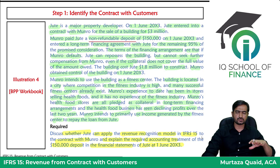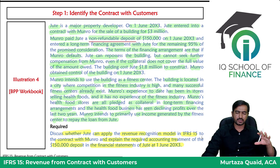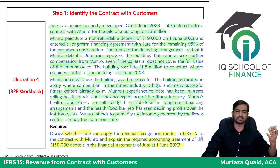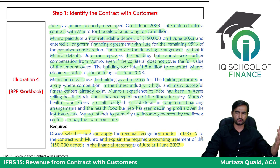Looking at the overall scenario, we check whether the contract meets the 5 criteria under IFRS 15. Of the 5 criteria, apparently 3 or 4 are met. The commercial substance of the contract appears to be present — Jute has transferred a building to Munro who will use it as a fitness center. However, one major problem arises.